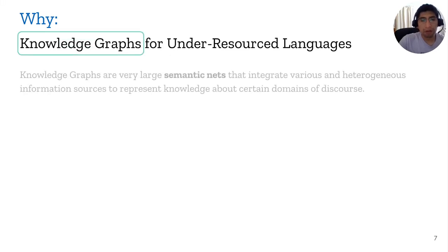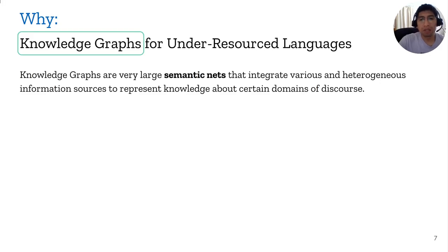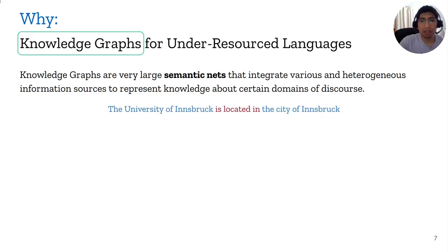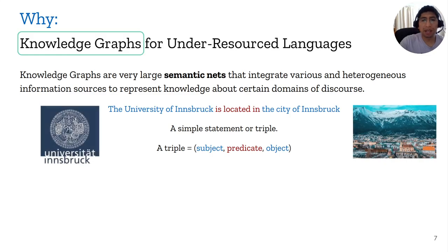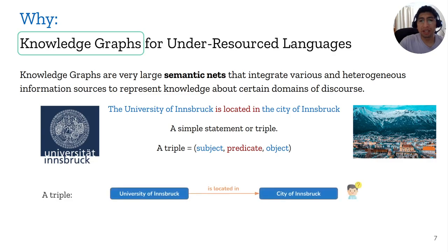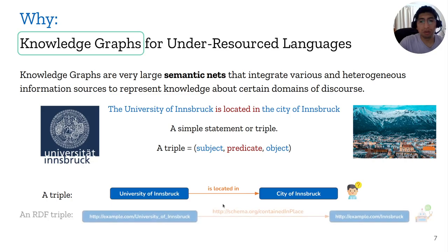Knowledge graphs are very large semantic nets that integrate various heterogeneous information sources to help represent knowledge and language in certain domains. For instance, if we have the statement 'The University of Innsbruck is located in the city of Innsbruck,' we can convert this into a simple triple. A triple is composed of a subject, predicate, and object. In this case, the subject is the University of Innsbruck, the predicate is 'located in,' and the object is the city of Innsbruck.